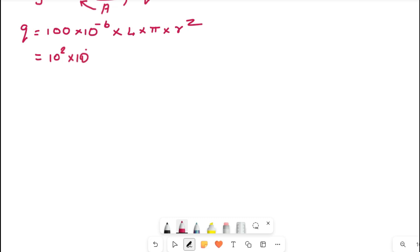So 100 into, that we can write as 10 square, into 10 raised to minus 6, into 4 into pi value 3.14, into R which is 1.25 square.